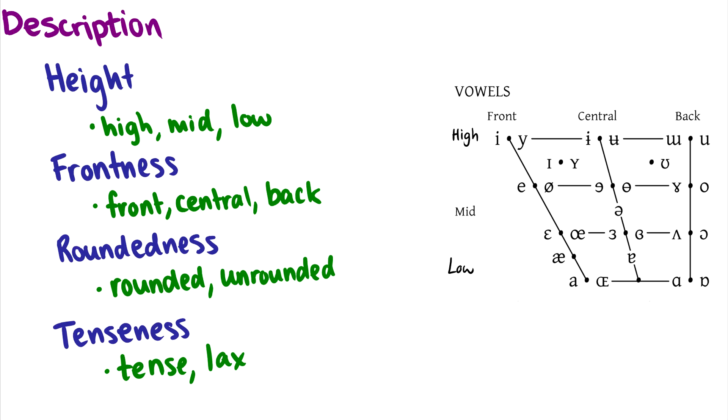The first description is height, and that is how high in your mouth is your tongue. We have the high, the mid, and the low. So you can see a sound like ee is very high. Compare that with a sound like ah. You can feel the difference between ee and ah in the height of your tongue.